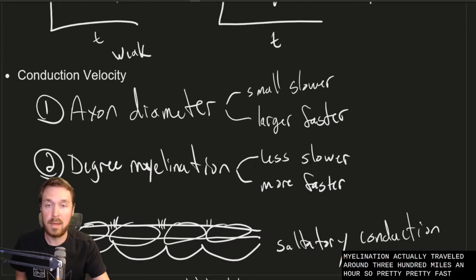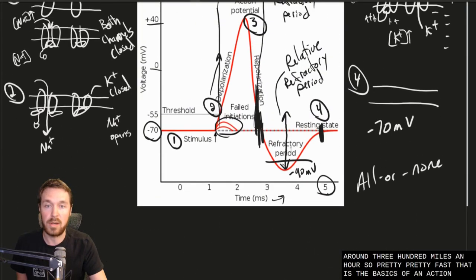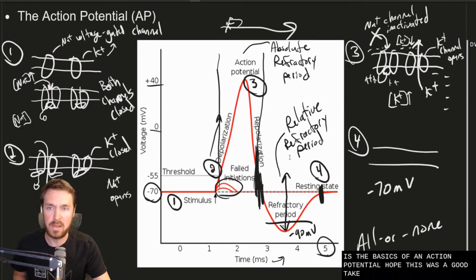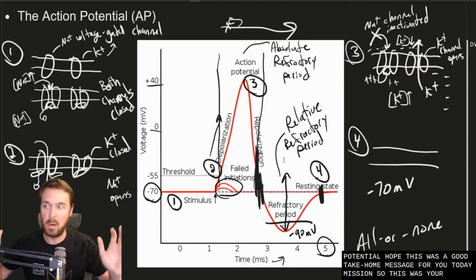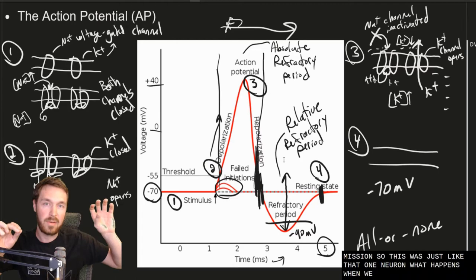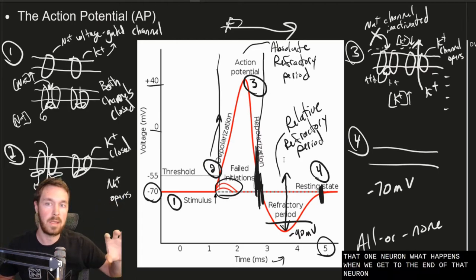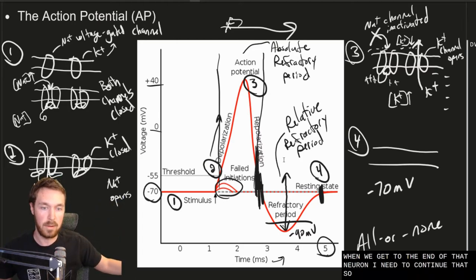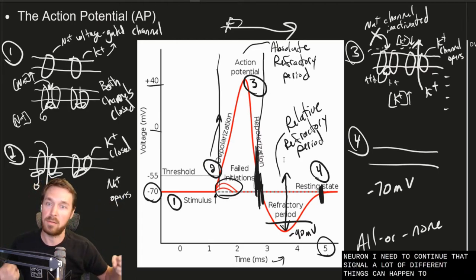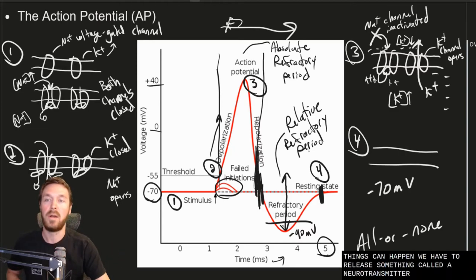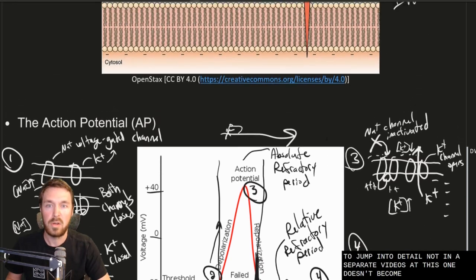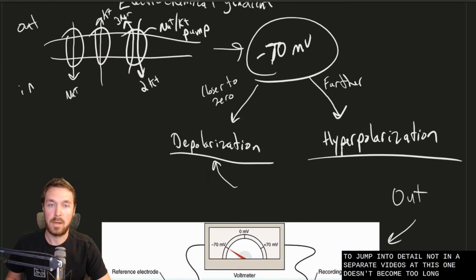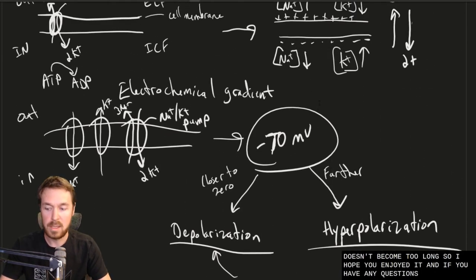That is the basics of an action potential. The next video will be on synaptic transmission — what happens when we get to the end of a neuron and need to continue that signal. A neurotransmitter needs to be released, and we'll go into detail on that in a separate video. Hope you enjoyed it, and if you have any questions, just let me know.